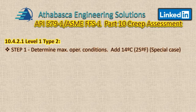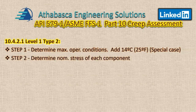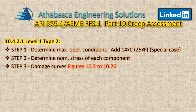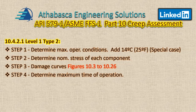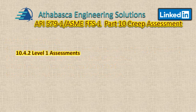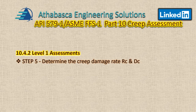There are a number of steps. The first step is to determine the maximum operating conditions — there's a special case we'll talk about later where we add 14 degrees if applicable. Next, we determine the nominal stress for each component using the annexes found in API 579. Then we look at the damage curves — figures 10.3 to 10.26 — and in step four we determine the maximum operational periods. Steps five and six determine the creep damage range from those curves, and the final step is to conclude whether this is a pass or fail situation.